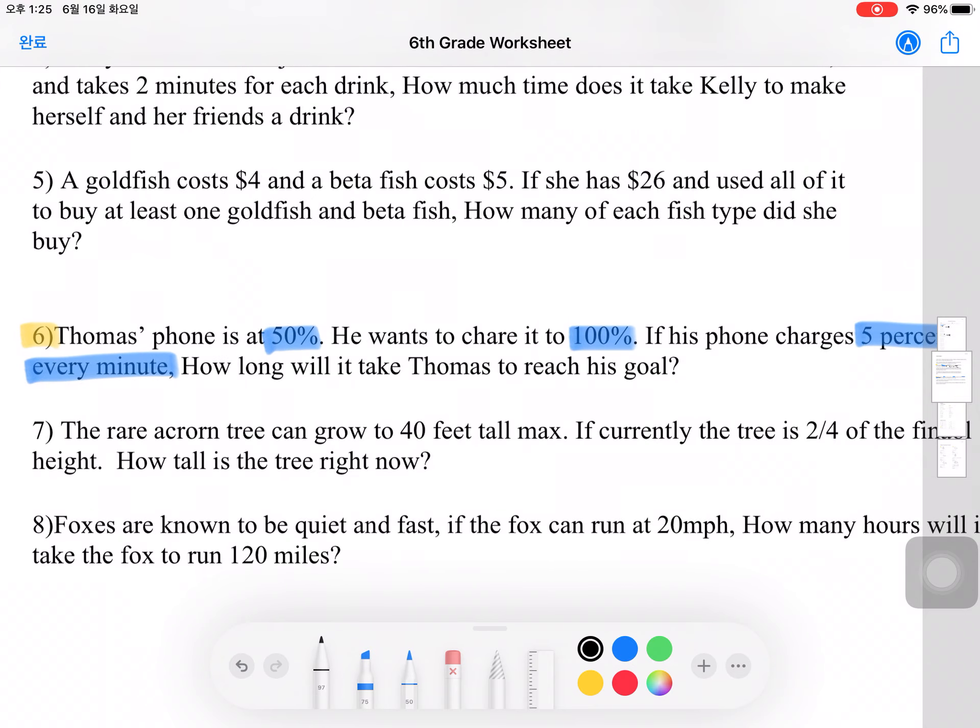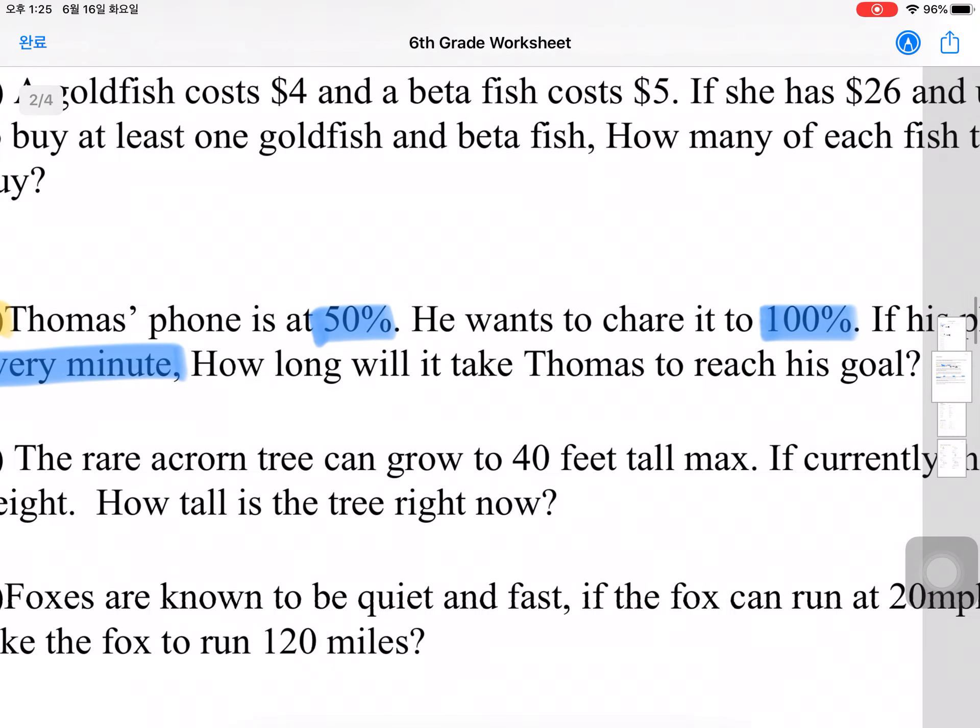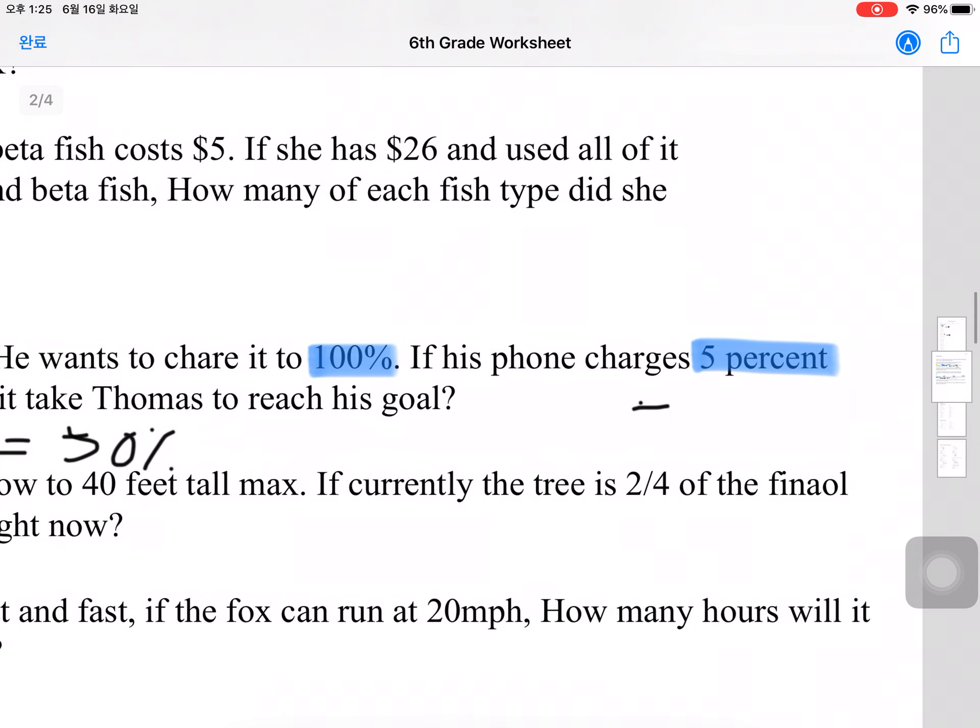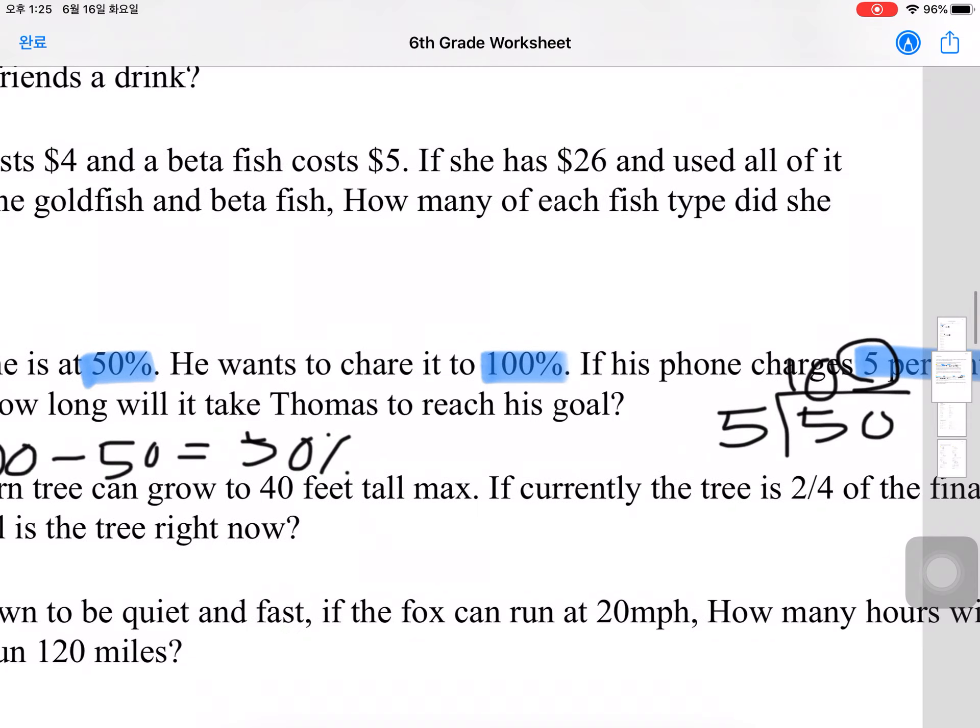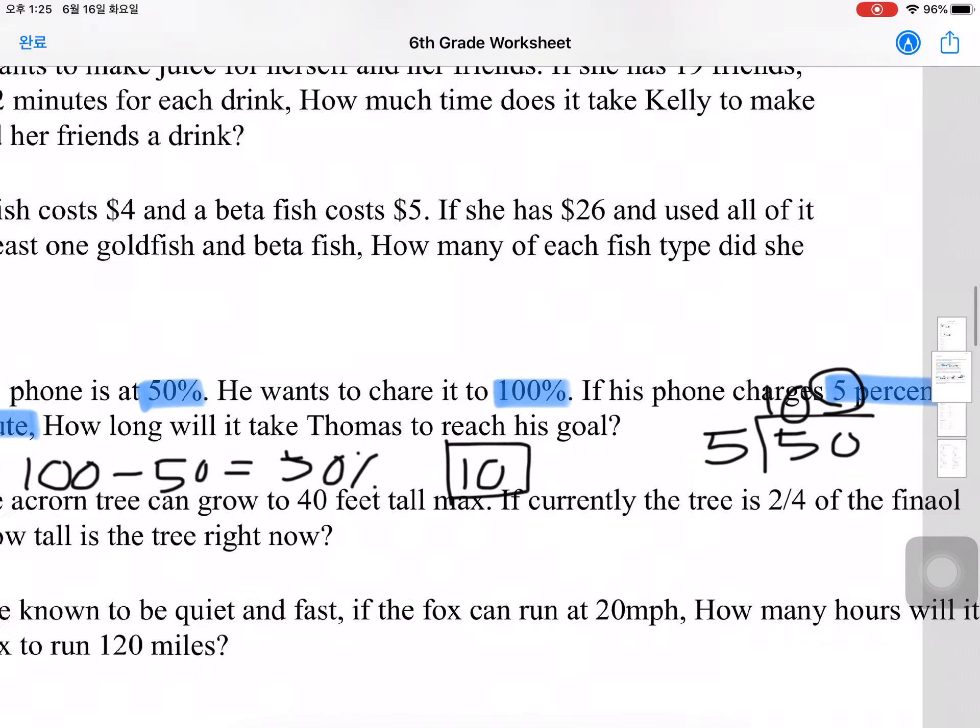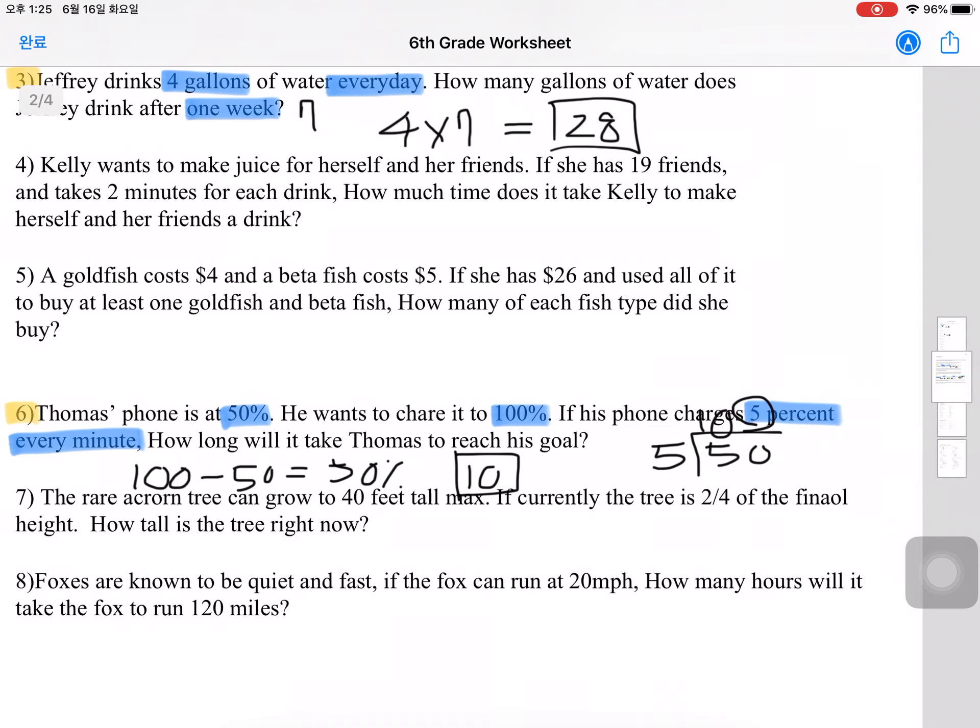First we want to figure out how many percent his phone needs to charge, which is 100% minus 50%, to come out to a total of 50%. And his phone charges 5% every minute. So in order to figure out how many minutes it takes, we do 50 divided by 5. So 50 divided by 5 is 10. It will take Thomas a total of 10 minutes to reach his goal.